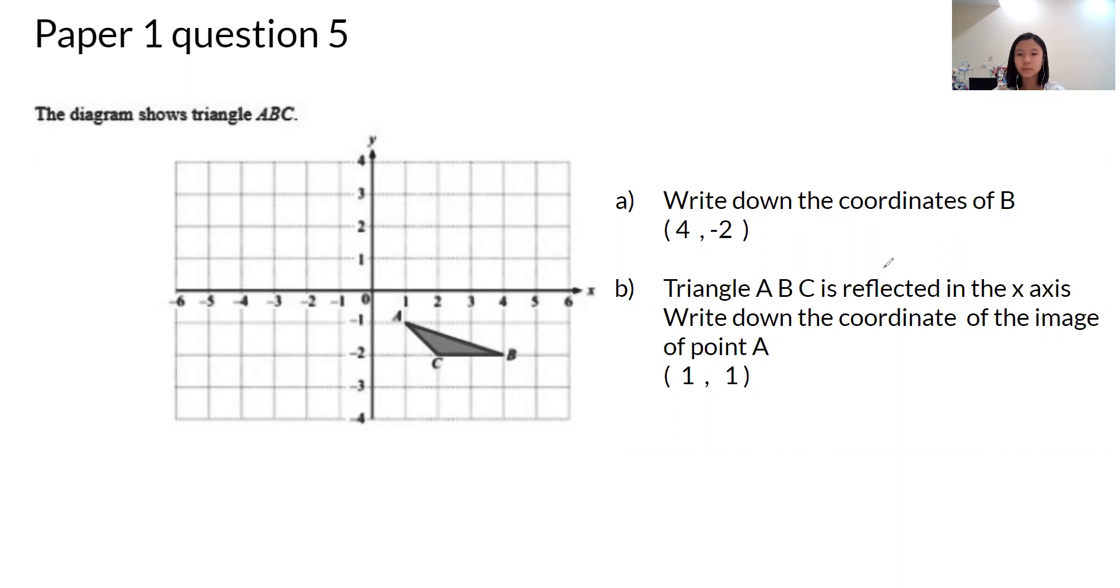Part A, write down the coordinates of B. B is here. First we need to write down the x which is 4 and the y is negative 2. So the answer is 4 comma negative 2 with brackets.